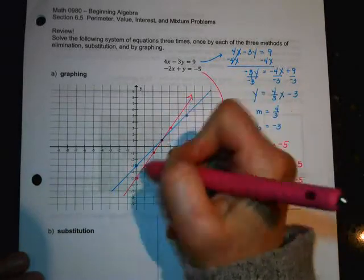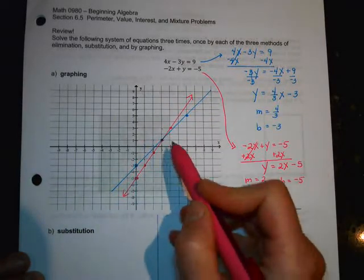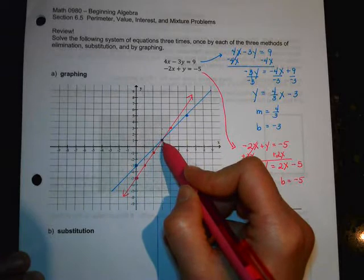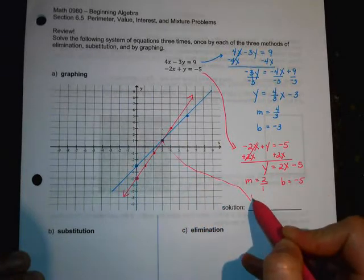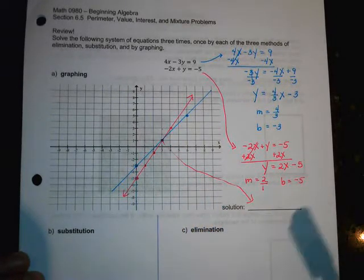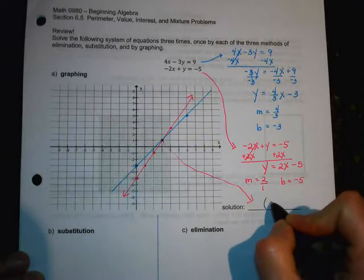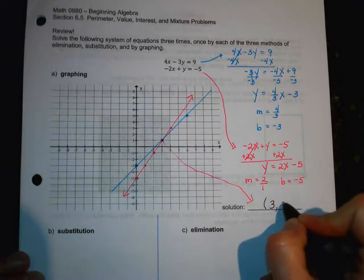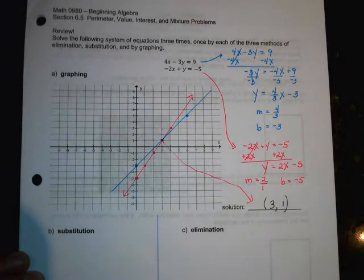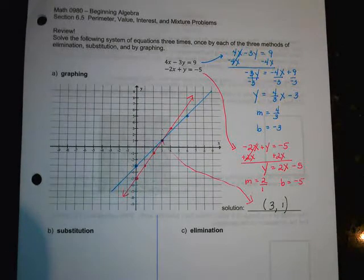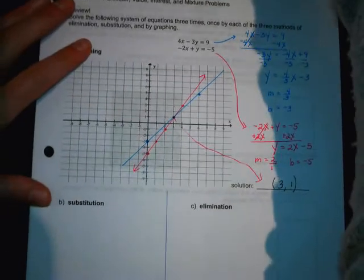All right, so you can see where they cross. That's your solution. It's always going to be an ordered pair. So it looks like the solution is going to be when x is 3, y is 1. So that's what we're going to get down here as well. You've got to get the same answer in time. All right, so let's see how you remember substitution.